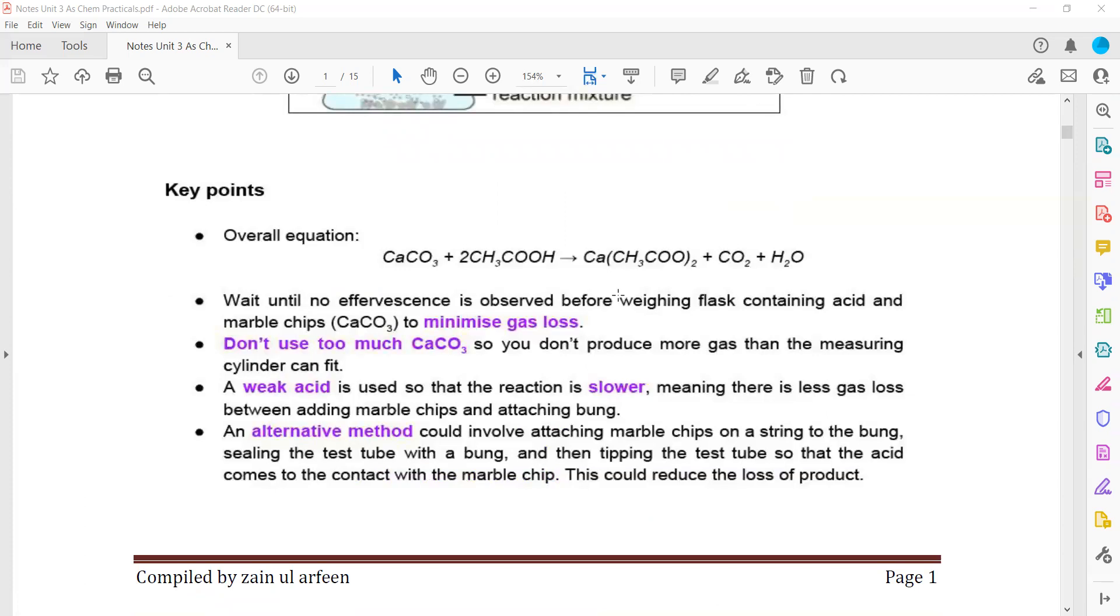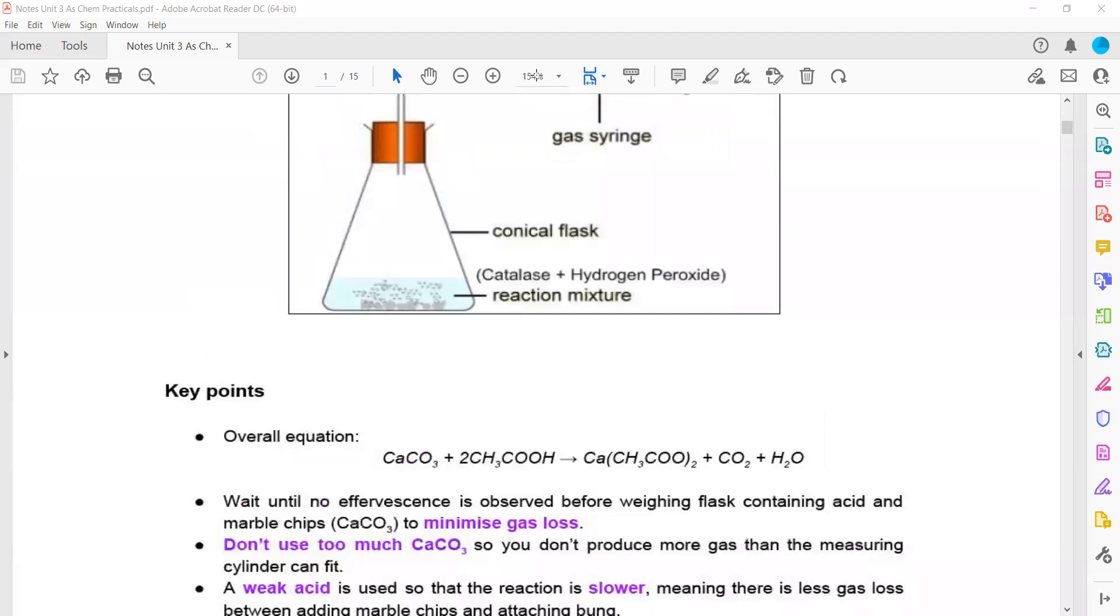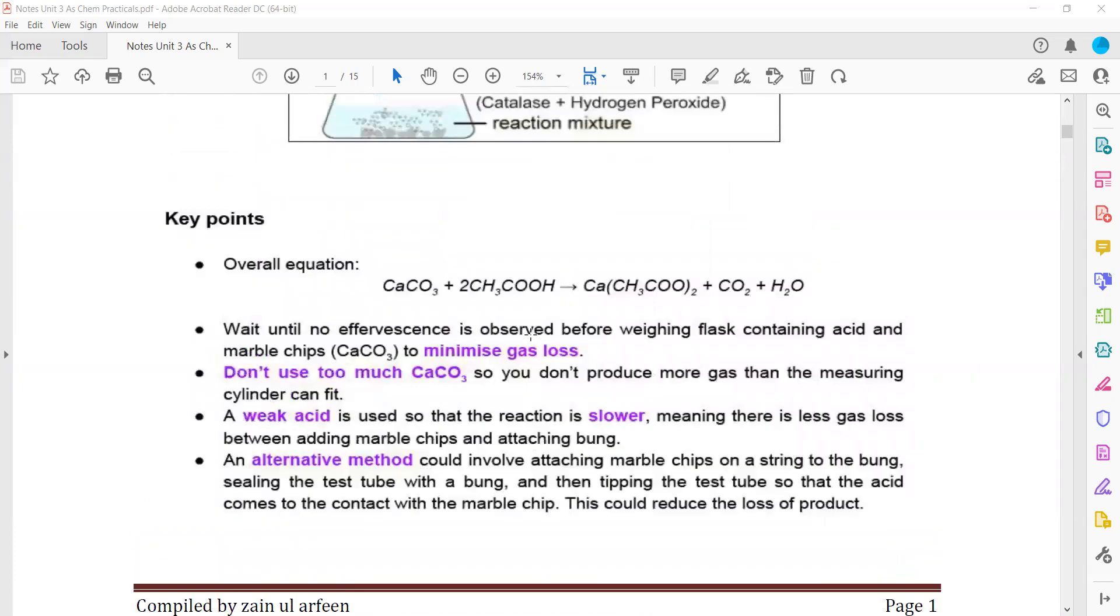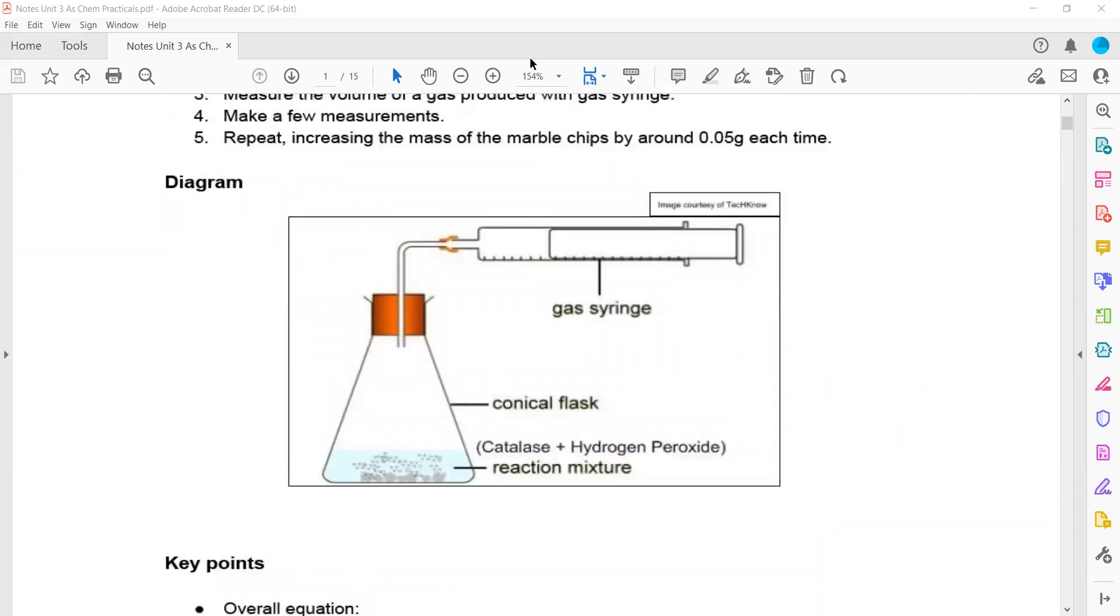An alternative method is attaching marble chips to a string in the bung. Place the bung initially with a test tube containing the marble chips inside, connected by cotton wool or thread. When you remove the thread, it enters the flask and the reaction occurs. You can also use a tap funnel to add the acid, which minimizes gas loss.